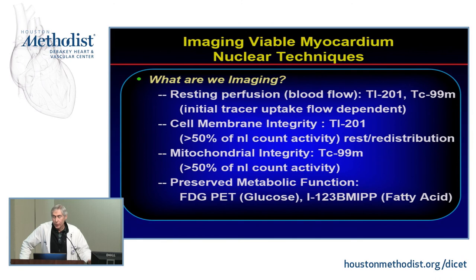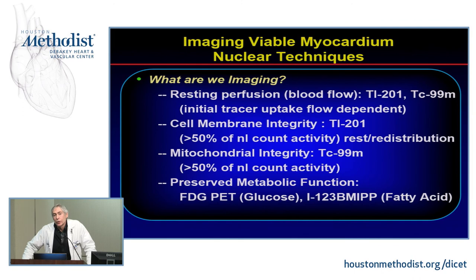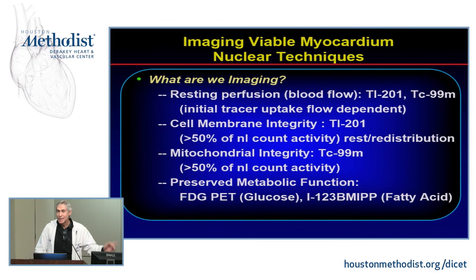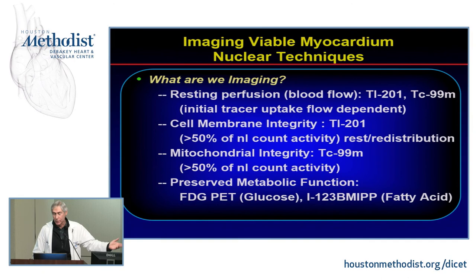In nuclear cardiac imaging, when we look at rest injections, we're looking at blood flow uptake that is flow-dependent — the basis behind thallium imaging. With thallium, you get redistribution of tracer back into underperfused areas. Cell membrane integrity is also essential: if the cell membrane is destroyed, thallium will not be taken up. Similarly, with technetium-based agents, if mitochondrial integrity is lost, technetium passes through and is not retained. Uptake indicates some viability, and the amount of uptake reflects the degree.